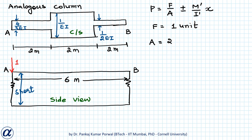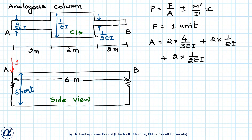The area A equals 2 × (4/3EI) plus 2 × (1/EI) plus 2 × (1/2EI). Adding all these terms gives A equals 13/3EI.